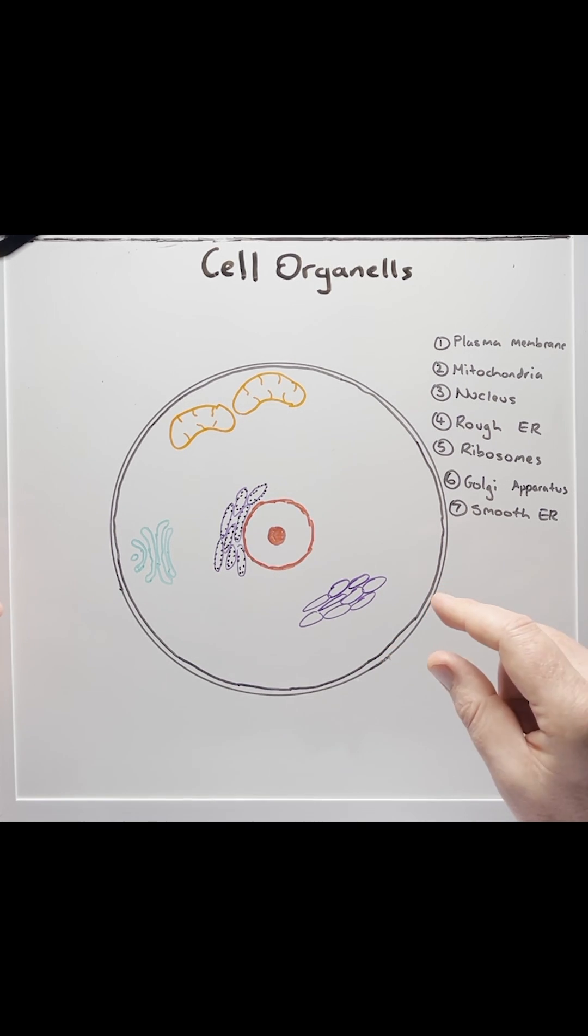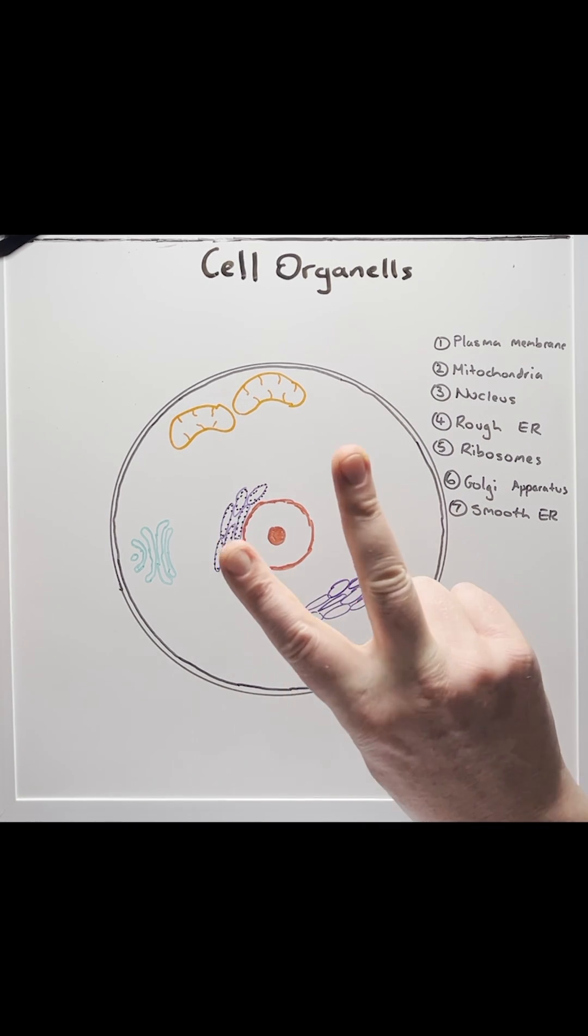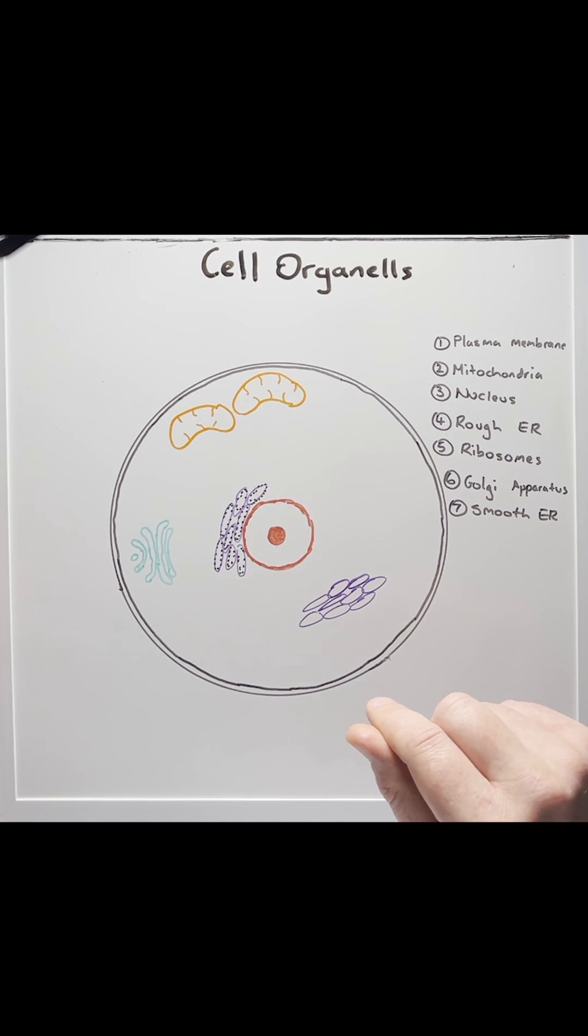Our body is made up of approximately 30 trillion cells, which carry out a multitude of functions that keep us alive. There are about 200 different types of cells in the body, all with different shapes, sizes and functions.